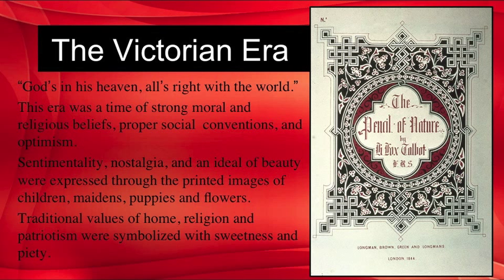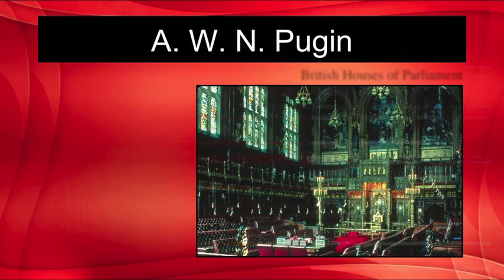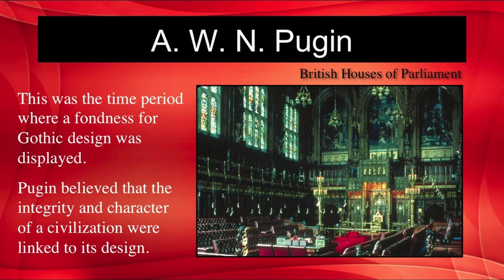The main production medium was chromolithography, an invention and innovation of the Industrial Revolution that unleashed a flood of color-printed images. This was a time period where a fondness for gothic design was displayed. Architect A. W. N. Pugin was the first to articulate a design philosophy. He defined design as a moral act that achieved the status of art through the designer's ideals and attitude. He believed that the integrity and character of a civilization were linked to its design. You can see the gothic characteristics clearly in Pugin's design of the British Houses of Parliament.